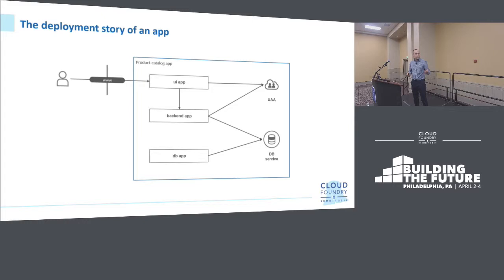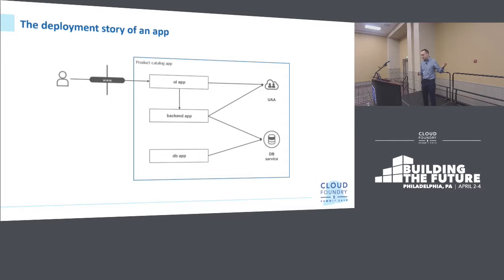We'll do so in the context of a realistic example application. Here we have a simple application with three processes consuming two backing services. Starting from the bottom, we have a DB application whose responsibility is solely to initialize and take care of the database — tables, initial content, sequences, etc. Next is a back-end application written in Java, consuming the same database and a UI service to manage users and scopes. On top, we have a UI application that delegates calls to the back-end and serves static HTML and JavaScript.